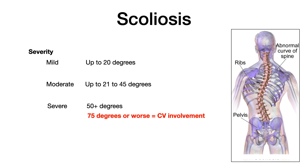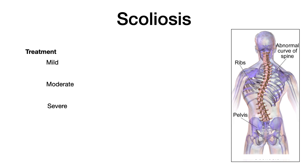Treatment is also categorized by severity. Mild scoliosis is treated with OMT alone. Moderate scoliosis is treated with OMT plus bracing — remember: moderate, OB stands for OMT plus bracing. Severe scoliosis is treated with surgery — both severe and surgery begin with the letter S, which makes it easy to remember. That wraps up our conversation on scoliosis — not a lot of information to know, but certainly important nonetheless.